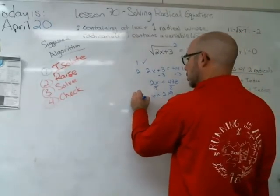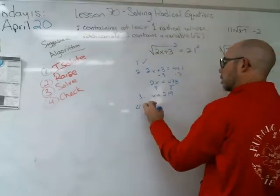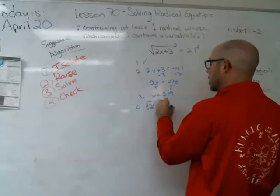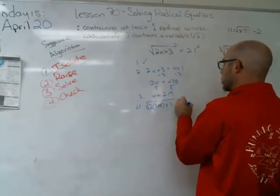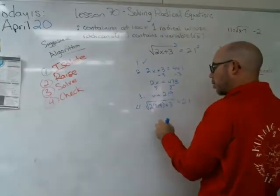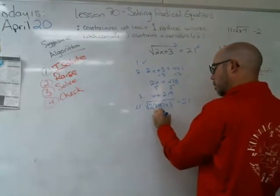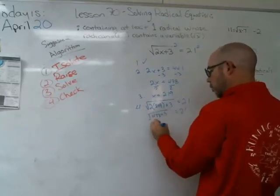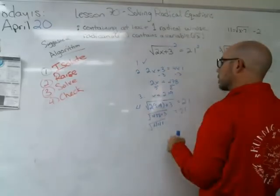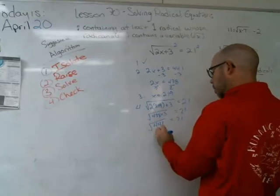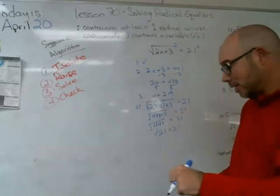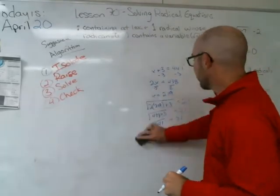Step four: check. Go back to the original — plug in 219. That's 2 times 219 plus 3 under the root sign equals 21. That gives 438 plus 3, which is 441. The square root of 441 is 21. 21 equals 21 — QED. We verified that x equals 219 is a valid solution.